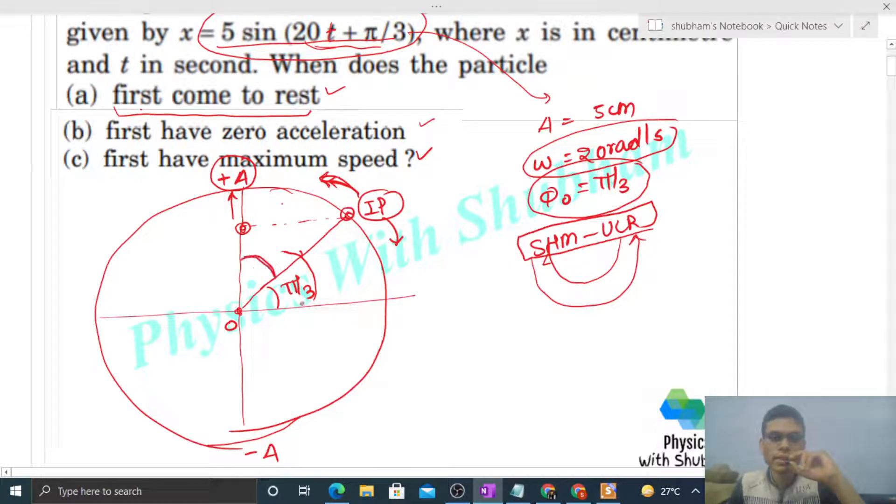You can see this angle is π/3, so this angle becomes π/6. So how much angle to cover? π/6. And with what omega? That is 20. So θ divided by ω gives you time in uniform circular motion. π/6 angle to cover with ω = 20, so the time is π/120 seconds.